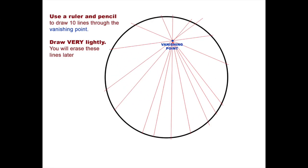Next you're going to use a ruler to draw about 10 lines that cross through your vanishing point. These are going to end up being your guidelines. You're going to erase them later, so draw very lightly.